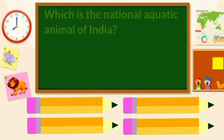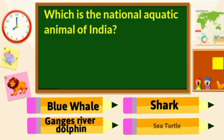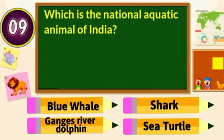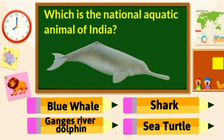Which is the National Aquatic Animal of India? Blue Whale, Shark, Ganges River Dolphin or Sea Turtle? Ganges River Dolphin is the National Aquatic Animal of India.